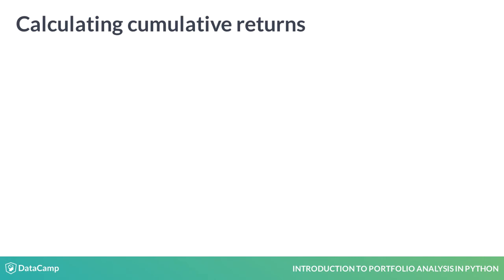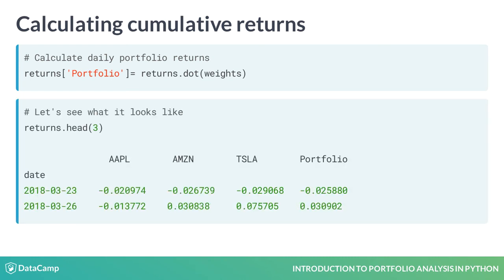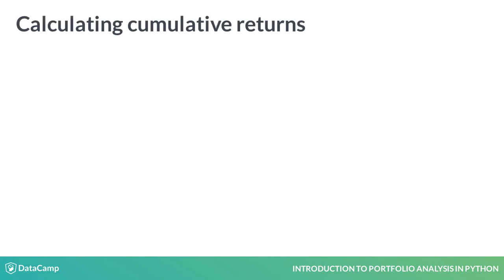The cumulative return allows you to track total performance over time. First, create a daily return series for the portfolio by multiplying the weights with the returns. You need to use dot multiplication as you're multiplying a series of weights with the data frame of returns and do so element-wise. Now it's time to go from daily returns to cumulative returns.